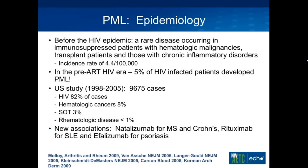Before the HIV epidemic, PML was a very rare infection, seen only in people who were profoundly immunosuppressed. Those with immunologic malignancies or transplant patients had a low incidence rate of around four per hundred thousand. In the pre-ART era, up to five percent of HIV-infected patients eventually developed PML. In the United States, a study done in the post-HAART era looking at 10,000 cases found that 82 percent occurred in HIV-infected patients.